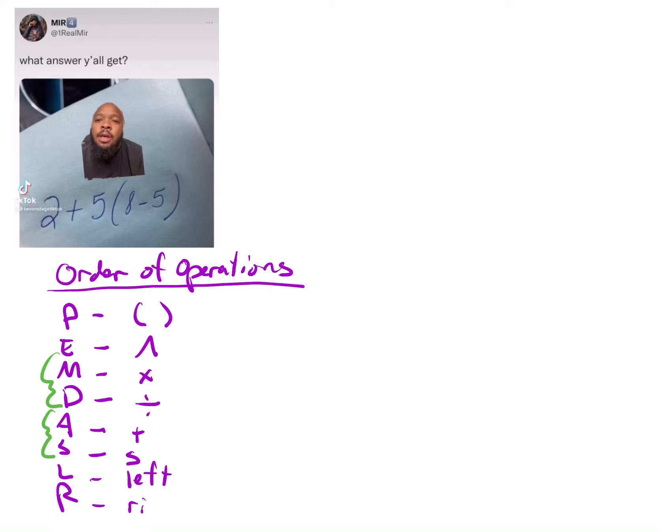The reason we group multiplication and division is whenever we get to a line and we have to decide between multiplication and division, we do it left to right. Then after that, once we get to a line where we have to decide between addition and subtraction, again we do it left to right.